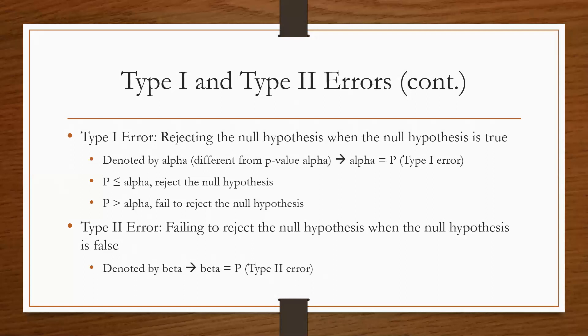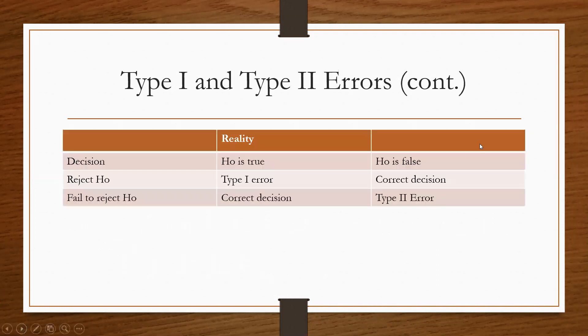Basically, the Type I error is rejecting the null when the null hypothesis is true. It's denoted by alpha. It's different from p-value; alpha and p-value are separate things, but people in stats aren't very original. Basically, if p is less than or equal to alpha, then we should reject the null. If p is greater than alpha, then fail to reject the null.